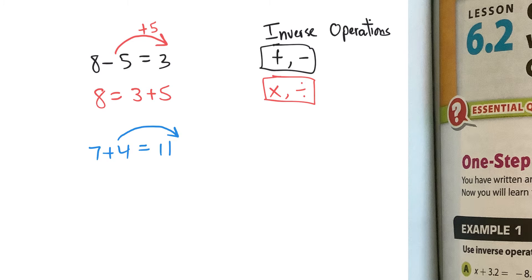But if I were to bring this 4 to the other side here, I would have to, as it passes this equal sign, I would have to use the inverse operation of subtracting 4. And so if I were to rewrite this, it would be 7 is equal to 11 minus 4. Right? So I use these ideas of inverse operations to solve equations.